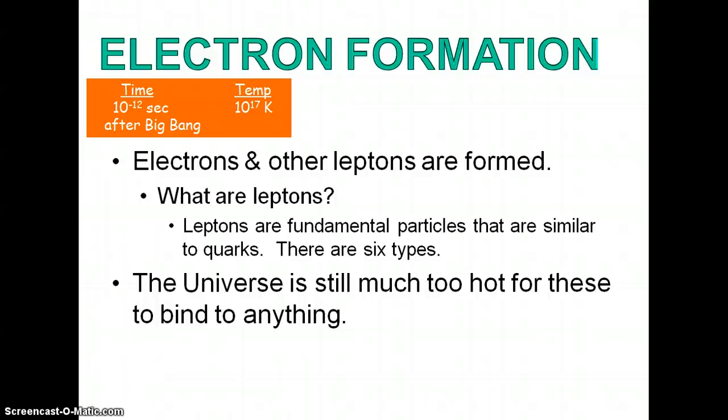Next, we have electrons and other leptons formed at 10 to the negative 12 seconds after the Big Bang — the universe has cooled to 10 to the 17th Kelvin. Leptons are fundamental particles similar to quarks, and there are six of them; basically, a lepton is an electron and its family members. At this point, though, it's still much too hot for these electrons or leptons to bind to anything, such as the protons or neutrons that have just been formed.